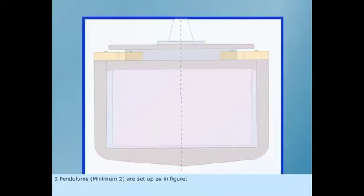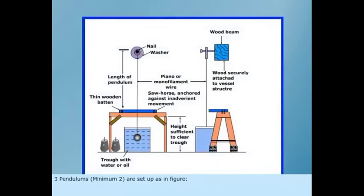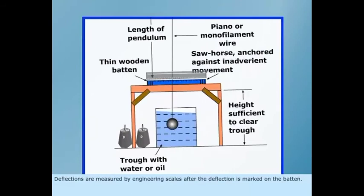3 pendulums or minimum 2 are set up as in figure. A trap filled with water is provided to dampen oscillations. Deflections are measured by engineering scales after the deflection is marked on the baton.